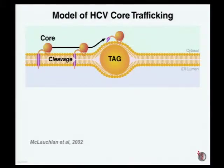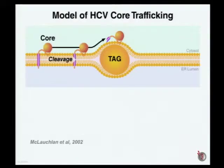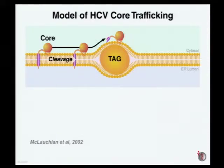We turned to the core protein. The model of core translocation onto lipid droplets was developed by the McLaughlin lab in 2002. They showed that core, which is the first protein of the polyprotein produced with a C-terminal anchor, is firmly anchored in the bilayer of the membrane. However, after intramembranous cleavage of this membrane anchor, the protein becomes more mobile and can, via lateral diffusion, migrate onto the surface of nascent lipid droplets and bud with these lipid droplets into the cytoplasm.